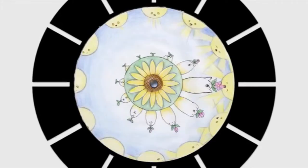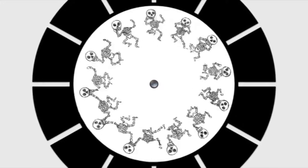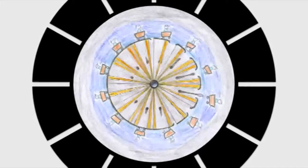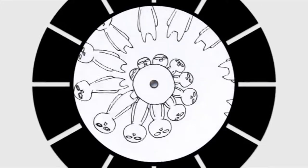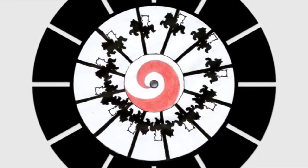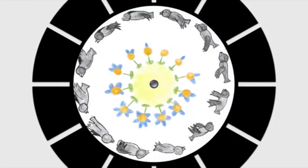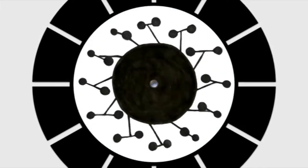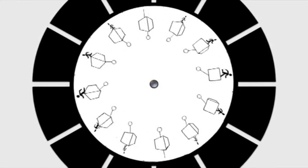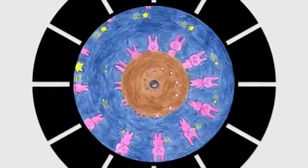The Phenakistoscope was an early animation device that used the persistence of vision principle to create an illusion of motion. The Phenakistoscope is the predecessor of the Zoetrope. It uses a spinning disk attached to a wooden handle. Around the center of the disk, a series of pictures is drawn corresponding to frames of the animation, and around its edge is a series of radial slits. The user spins the disk and looks through the moving slits at a reflection in a mirror, which makes the drawings seem to come to life. It was invented in 1833 by Joseph Plateau.